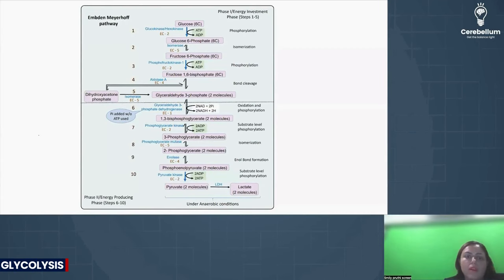Glycolysis, also known as Embden-Meyerhoff pathway. There are total 10 steps divided into phase 1 and phase 2. In phase 1, it is the energy investment phase. We are going to use ATP here.